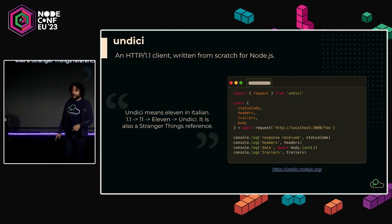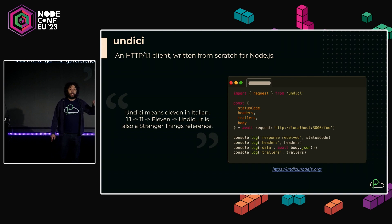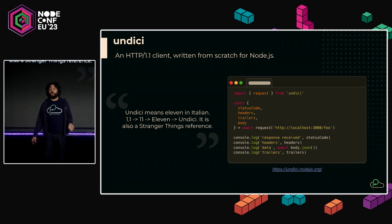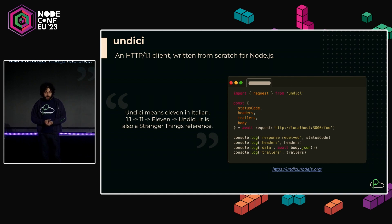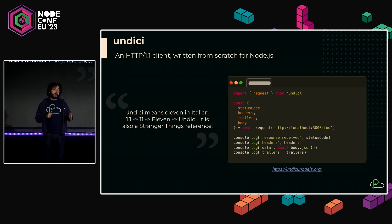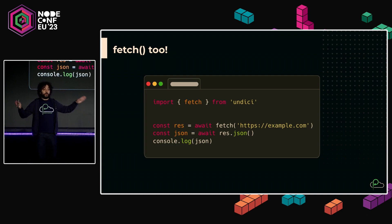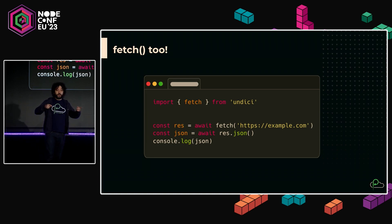I was watching Stranger Things, the first season, when I wrote this library. We just recently shipped HTTP 2.0 support for Undici. Undici has different APIs you can use — the basic request function, but also Fetch. It's the library that powers the Fetch API in Node.js itself. Fetch is not as fast as we want it to be, but it's stable enough to be used. If you want to work on performance and make Fetch faster, please — there's a long discussion happening. You can also just use it from Node.js core and it will work the same.